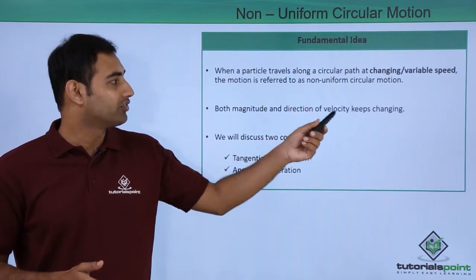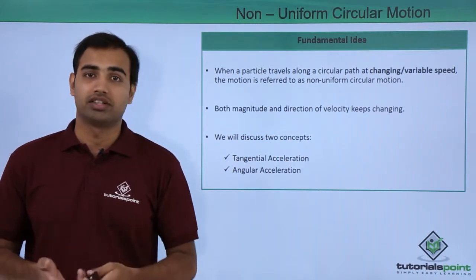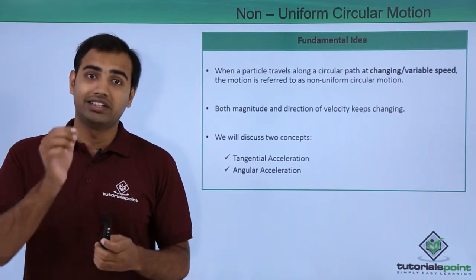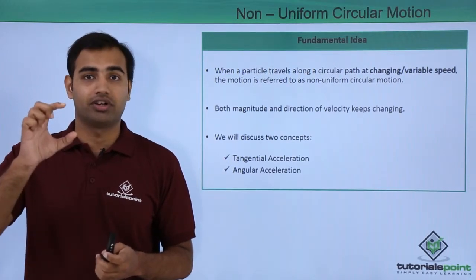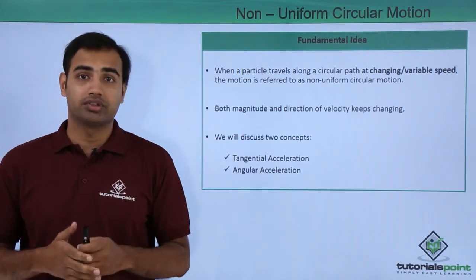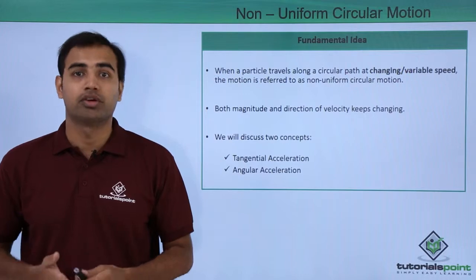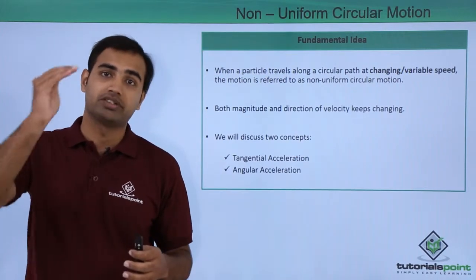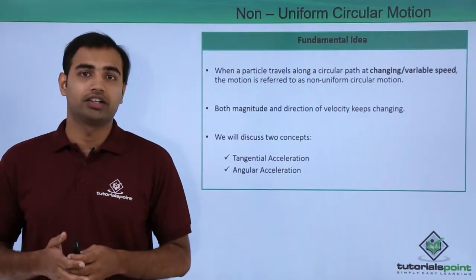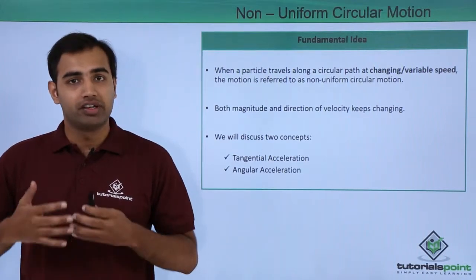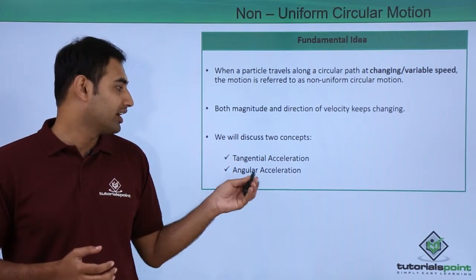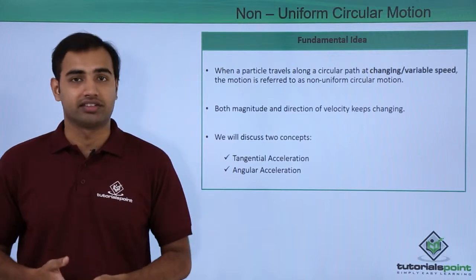In non-uniform circular motion, both magnitude and direction of velocity keep changing. In uniform circular motion, only the direction changed and the magnitude of velocity remained constant. But in non-uniform circular motion, the magnitude may also change, meaning the object may speed up or slow down. To get a better understanding, we will be discussing the topics of tangential acceleration and angular acceleration.